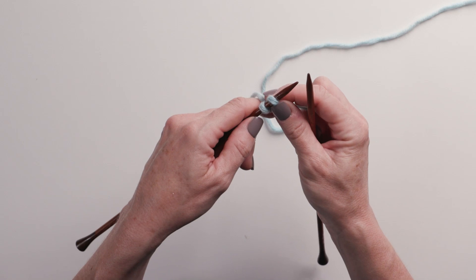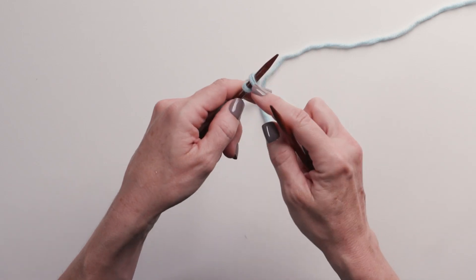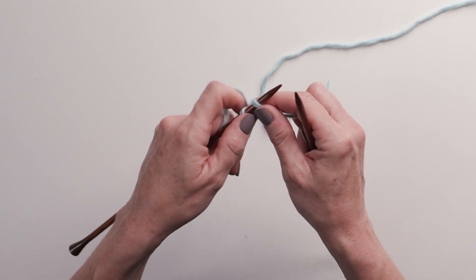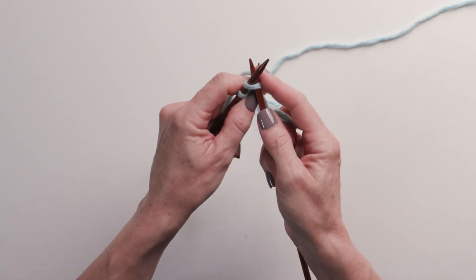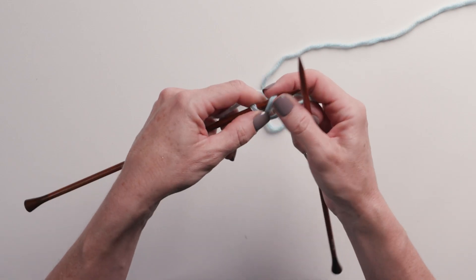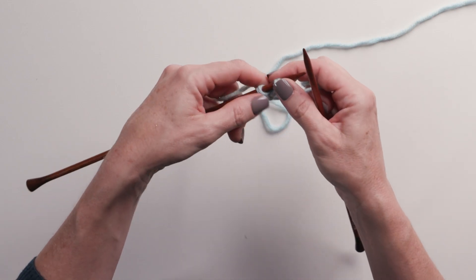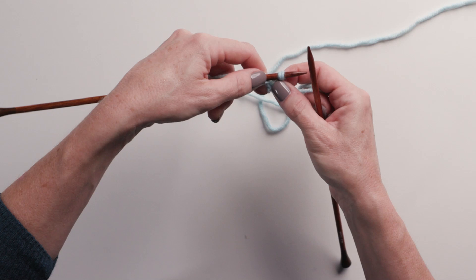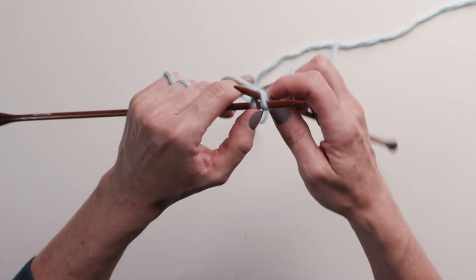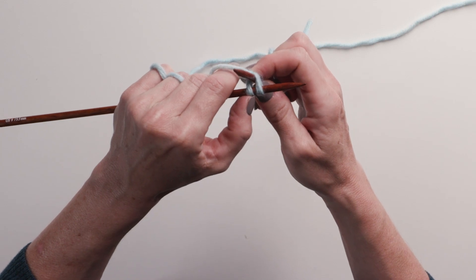If you've worked the knitted cast-on, this should look very familiar, because this is exactly the first step of the knitted cast-on. But for the cable cast-on, rather than knitting into that first stitch, you want to take your needle—hopefully you can see this—and you want to insert it from the front to the back between those two stitches.